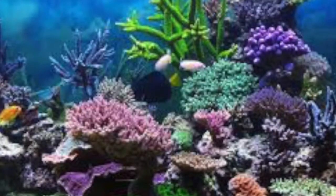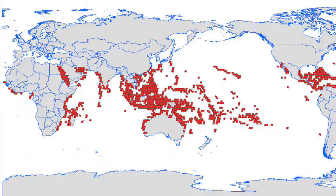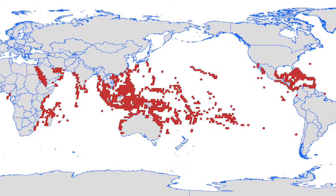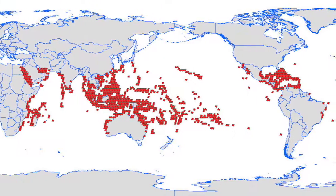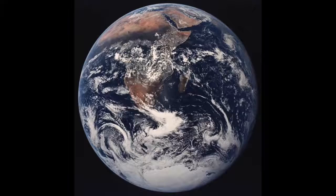But this leads us to a problem. Coral reefs only grow in tropical regions of the ocean. So how do we find out what the past climate was like in other parts of the world?